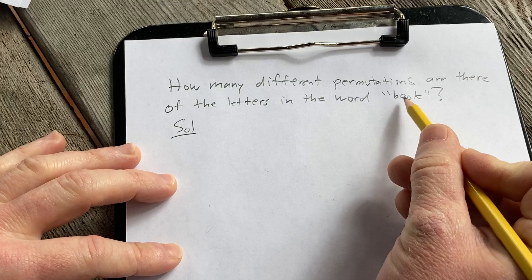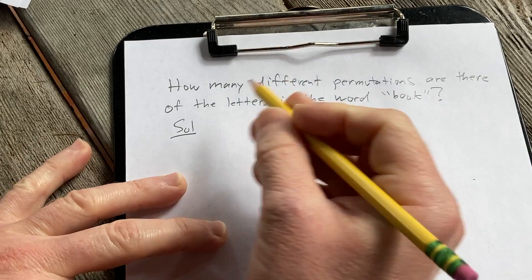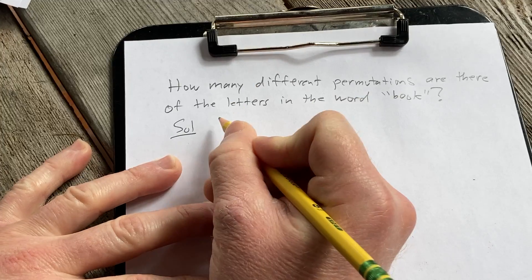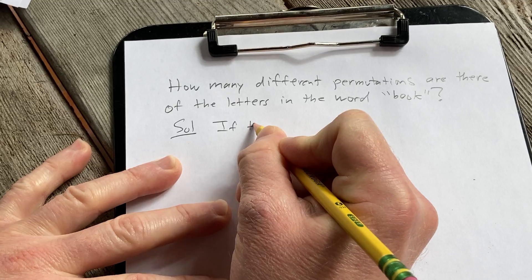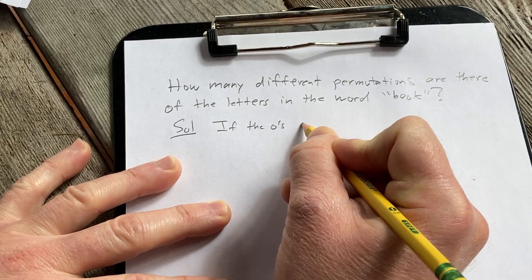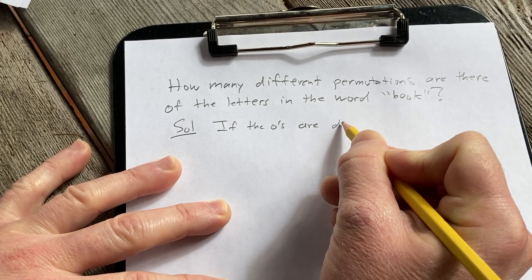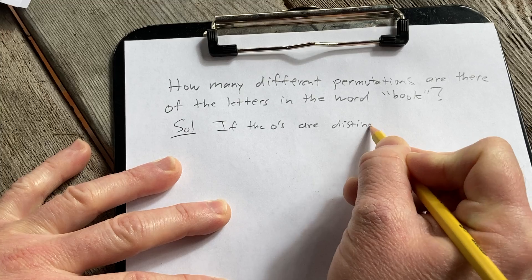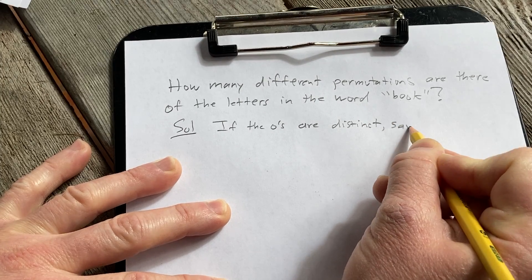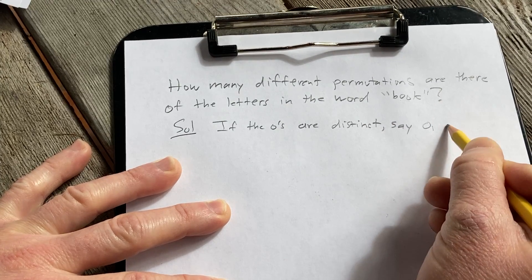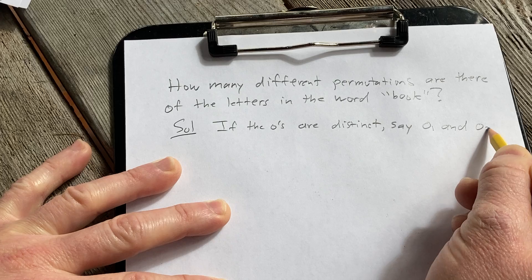So for a moment, let's pretend that the O's are distinct. So let's say we label them. If the O's are distinct, say we call them O sub 1 and O sub 2.